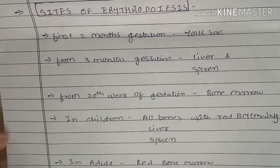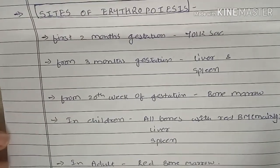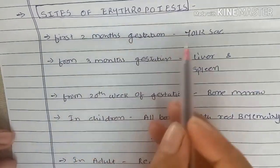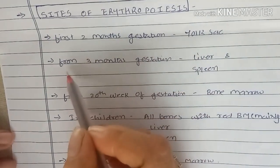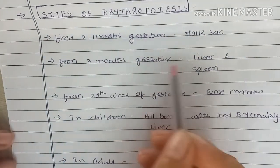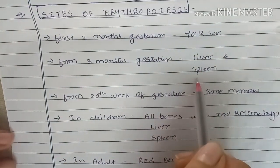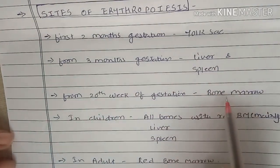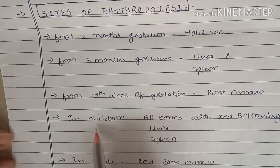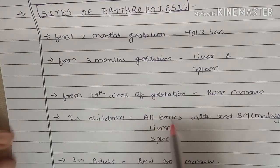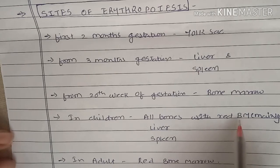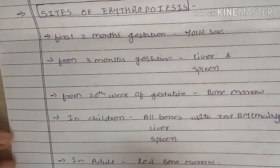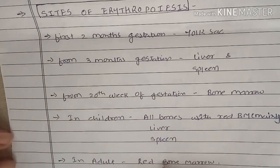Sites of erythropoiesis during different phases of life: during the first two months of gestation it is the yolk sac; from three months of gestation it occurs in the liver and spleen; from the 20th week of gestation it occurs in the bone marrow. In children, erythropoiesis occurs in all bones with red bone marrow, mainly liver and spleen.